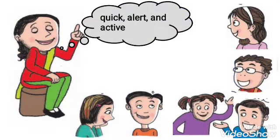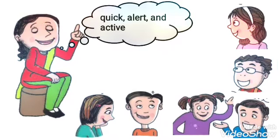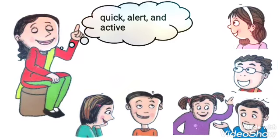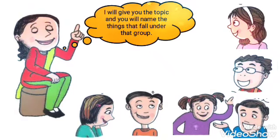So children, in this game you have to be quick, alert and active. Quick means fast, alert means attentive — you have to pay attention. And active means again you have to be very quick in your reply. When you are giving your answers, the letters are active. I will give you the topic and you will name the things that fall under that group.